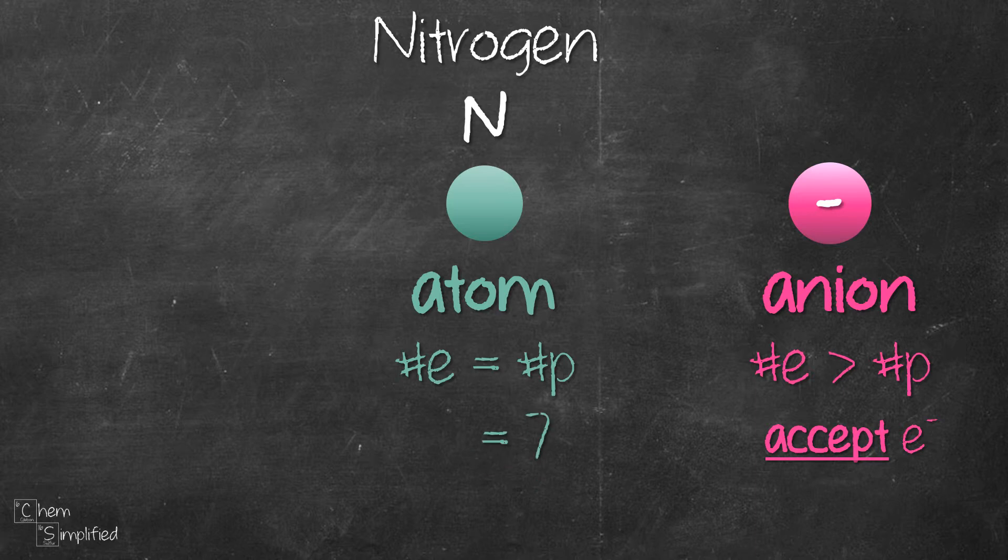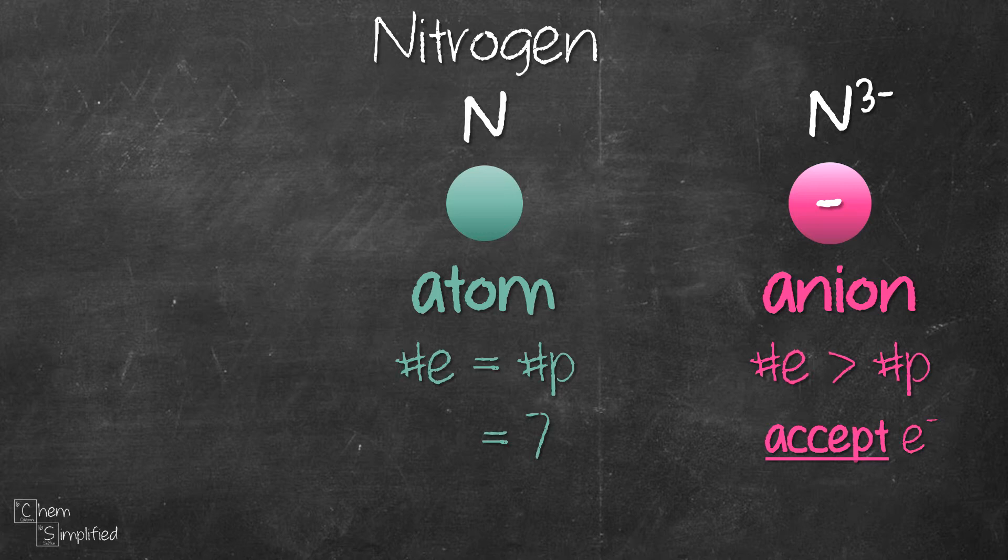Nitrogen is a non-metal in group 5A. Therefore, it's going to make a -3 ion. Since in order for nitrogen to become -3, it will have to accept 3 electrons. Therefore, the number of electrons is going to be 7 plus 3, which equals 10.